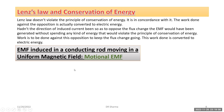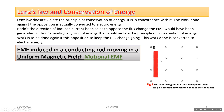Now let's discuss EMF induced in a conducting rod moving in a uniform magnetic field — that is, motional EMF. In this figure, there is a conducting rod which is initially at rest in a region of magnetic field. Since it is not moving, there is no potential difference created between the ends of the conductor, because the free electrons in it do not experience any force in this case.